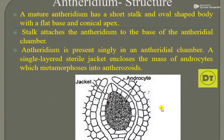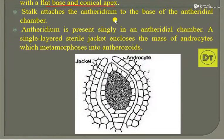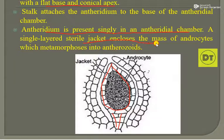A mature antheridium has a short stalk and an oval-shaped body with a flat base and conical apex. The stalk attaches the antheridium to the base of the antheridial chamber. Antheridium is present singly in an antheridial chamber. A single-layered sterile jacket encloses the mass of androcytes, which metamorphose into antherozoids.